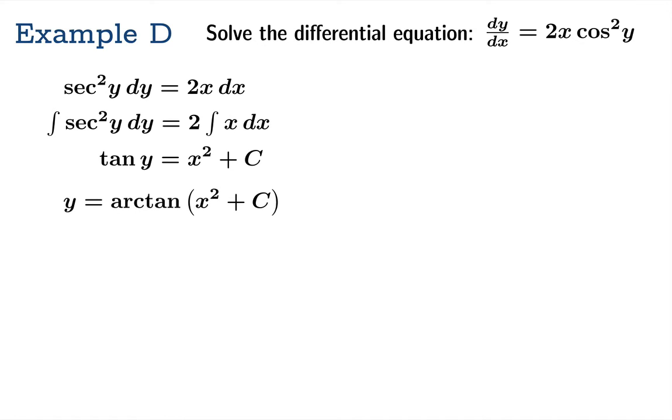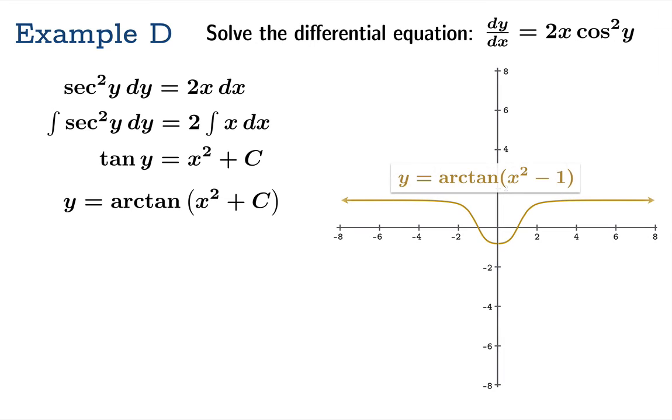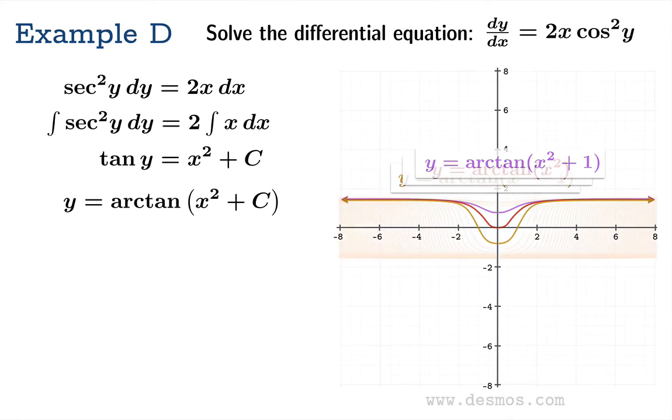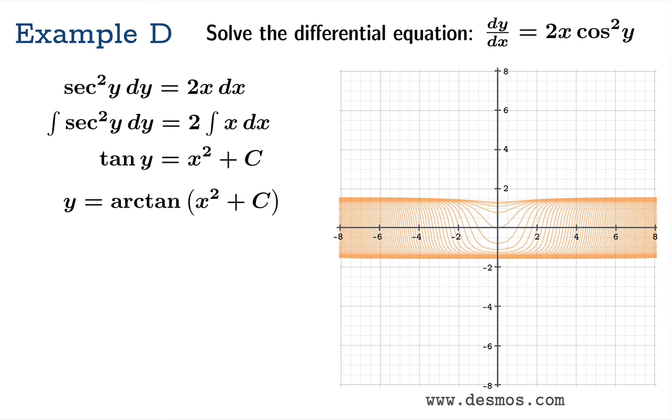Therefore y equals arctan of x squared plus c. We could choose different values of c - for example c equals negative 1, 0, and 1 - we'll get these various solutions. If we tried a whole bunch of other values of c using Desmos, we come up with this nice picture here. Quite beautiful.